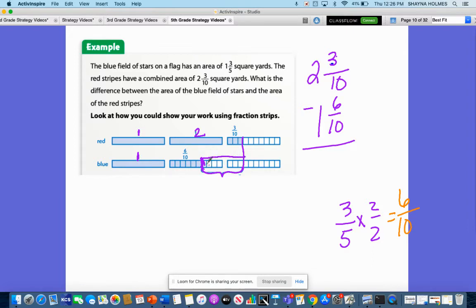So each one of these represents a tenth. So that's 1 tenth, 2 tenths, 3 tenths, 4 tenths, 5 tenths, 6 tenths, 7 tenths.